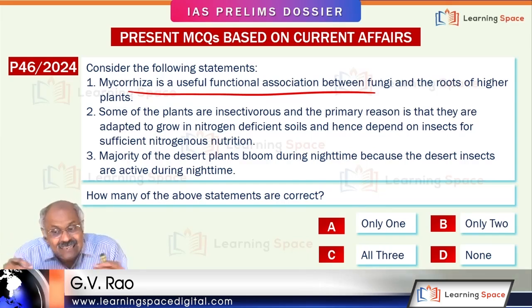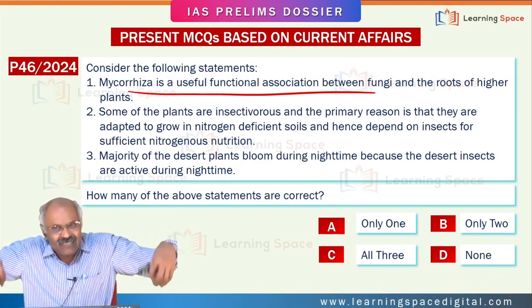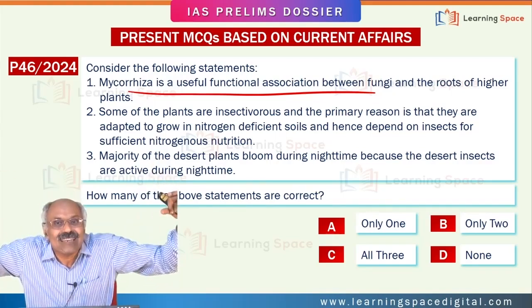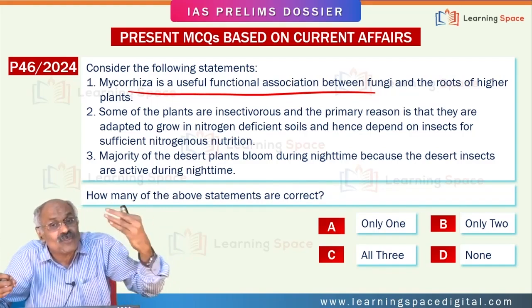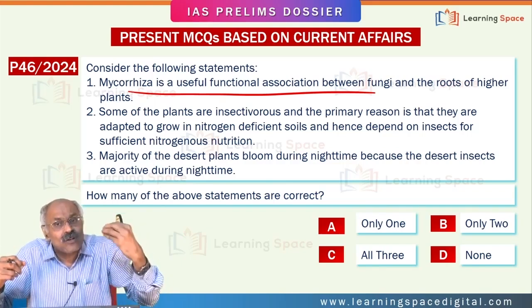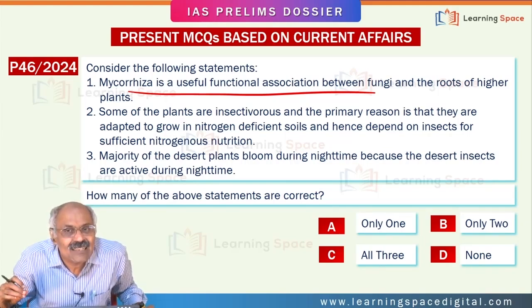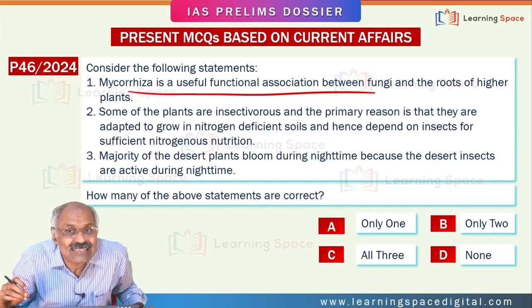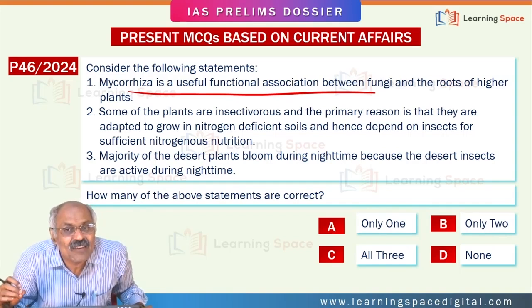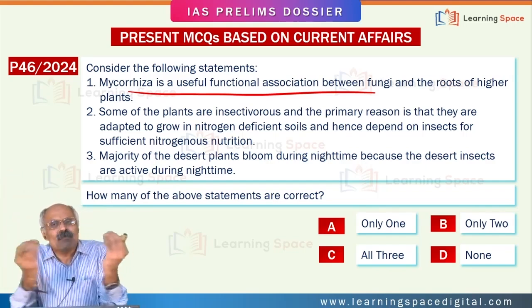Because of this mycorrhiza fungal, it facilitates easy uptake of water and nutrients by the plants through the root system. At the same time, through photosynthesis, whatever products the plant manufactures, it gives to this mycorrhiza fungi. This mycorrhiza fungi has a beneficial effect on the plants, and it is also benefited by the plants. So it is a symbiotic relationship.